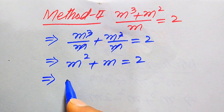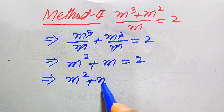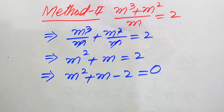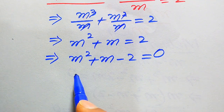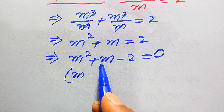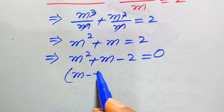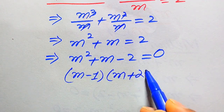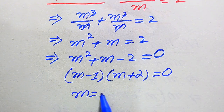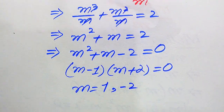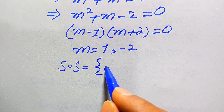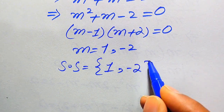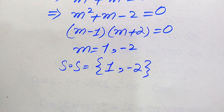Moving 2 to the left hand side gives m² + m − 2 = 0. We already factorized this in the first method: (m − 1)(m + 2) = 0, giving m = 1 and m = −2. We already verified these two values satisfy the given equation, so the solution set is {1, −2}. Thank you so much for watching this video. Please subscribe to my channel for more exciting videos.